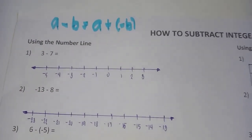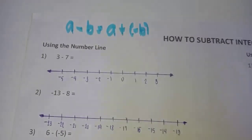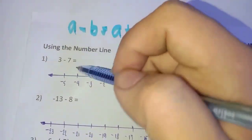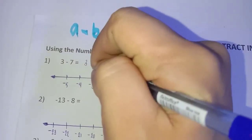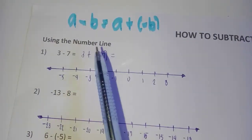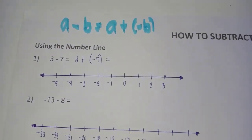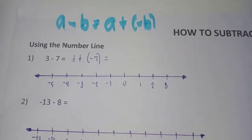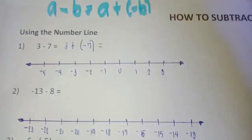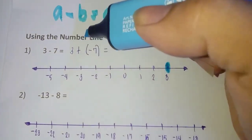Example 1: three minus seven. The first step is to rewrite the subtraction as addition: three minus seven is the same as three plus negative seven. Then we locate the first addend, three, on the number line.